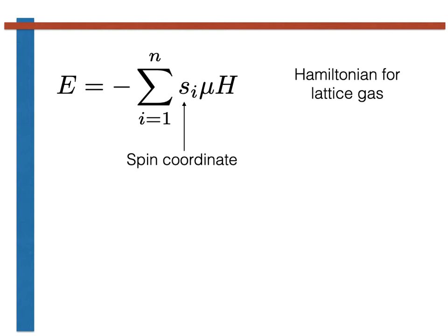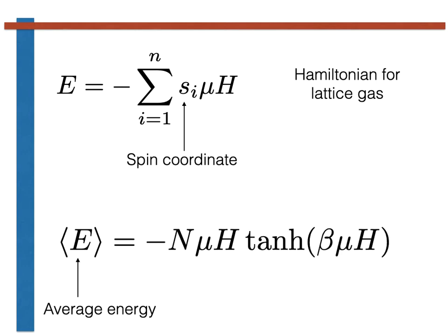We have shown elsewhere that the average energy for these lattice gases is given by the following expression, where in this expression beta is the inverse temperature.